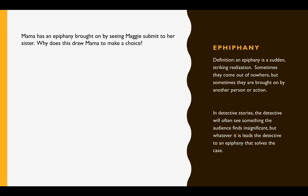Finally, let's talk about the idea of epiphany. An epiphany is a sudden striking realization. Sometimes an epiphany comes out of nowhere, but more often it's brought on by some person or action — something somebody says or does. In detective stories, the detective will see something the audience finds insignificant, but it leads the detective to an epiphany that solves the case. If you've ever read Sherlock Holmes or watched House on TV, the detectives will see something in passing — maybe a commercial — that doesn't mean anything to the people around them, but it causes the character to suddenly realize what solves the mystery or helps them make their decision.